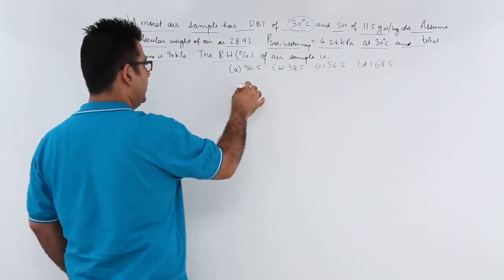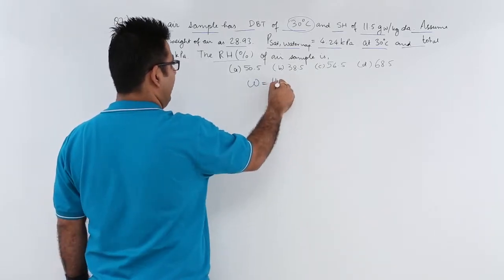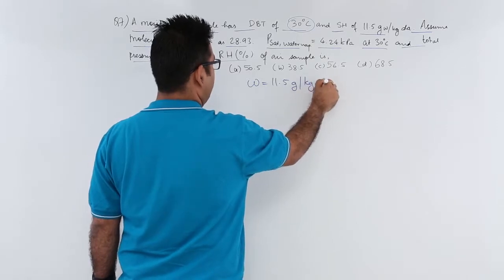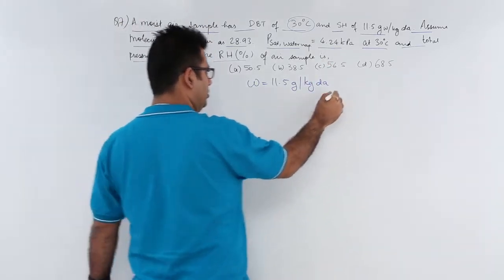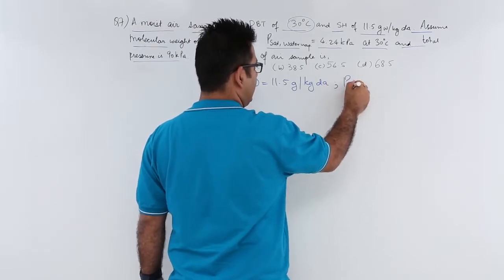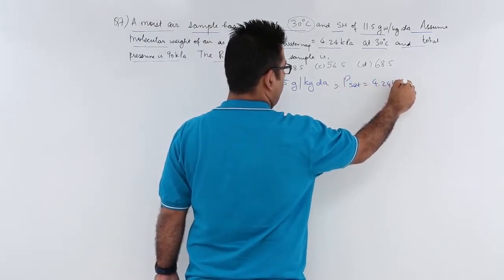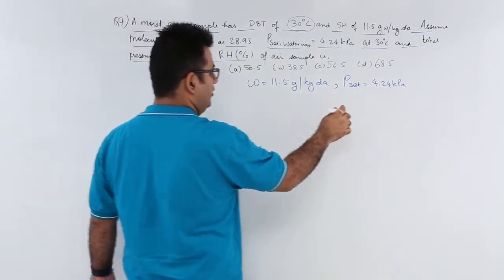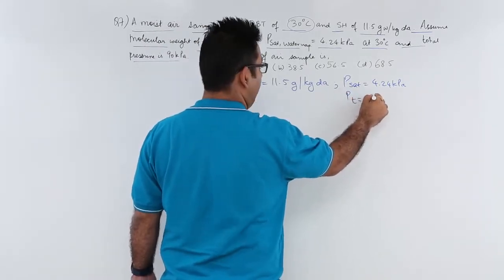Now given the omega, that is the specific humidity which is 11.5 grams per kg of dry air. Now you also know the saturation pressure which is this.